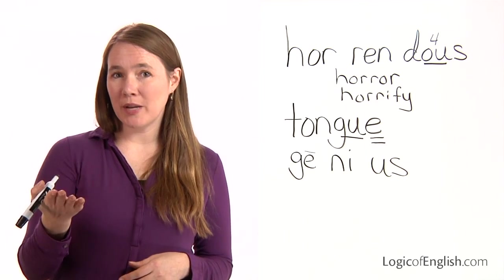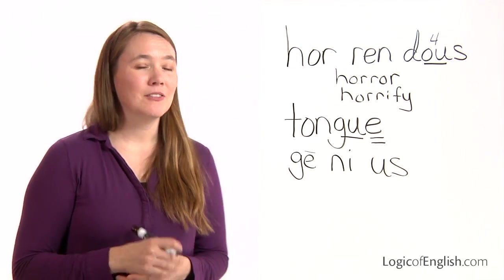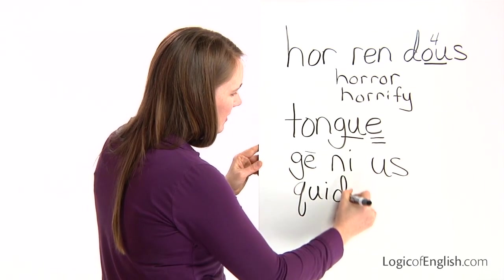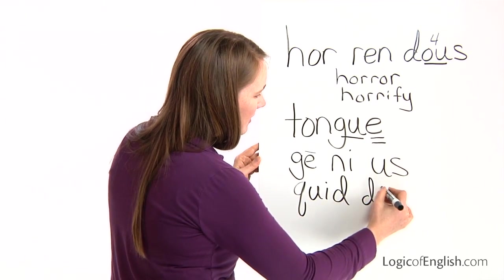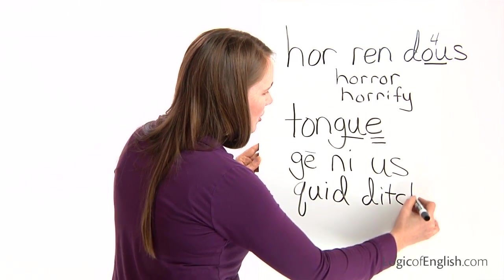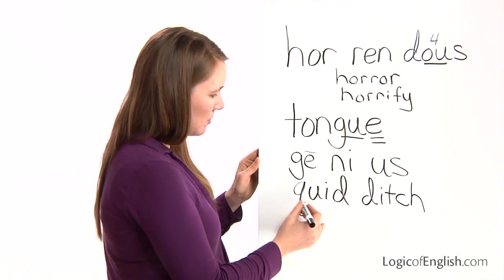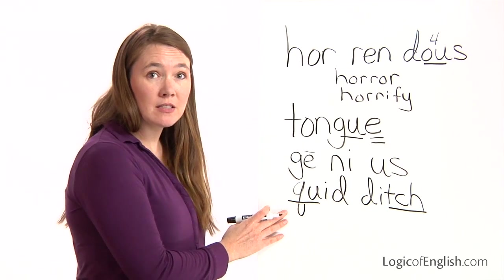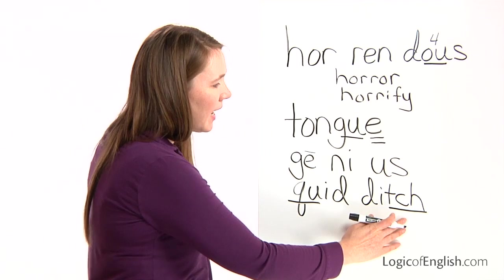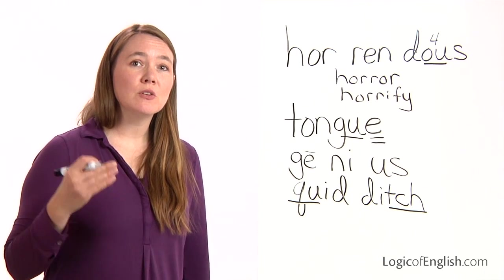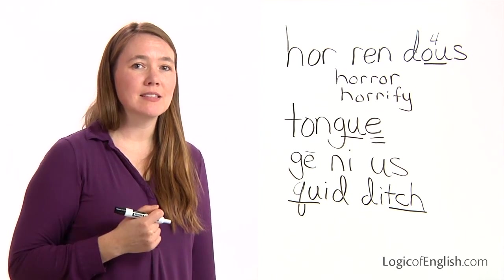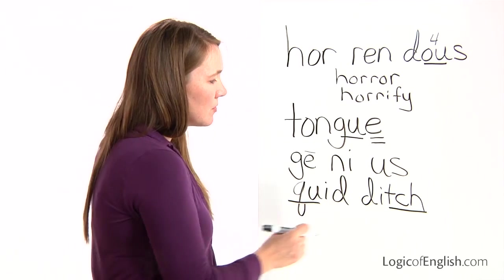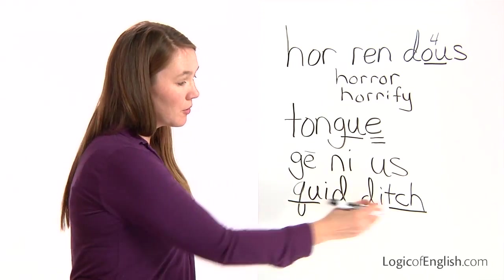How many syllables in quidditch? Two. The first syllable sounded out is 'quidd': QU, I, D. And the second syllable is 'ditch': D, I, T, CH. How will we mark quidditch? We'll underline the QU and we'll underline the CH. Q always needs a U and the U is not a vowel here. Then we have the three-letter TCH, which is used only after a vowel that does not say its name — and here the I is not saying its long sound. So the TCH is used correctly in the word quidditch.